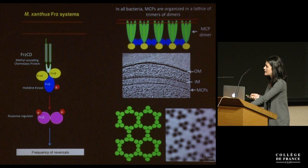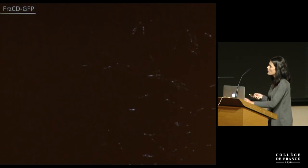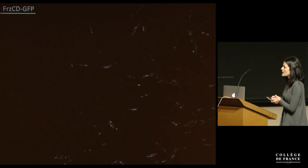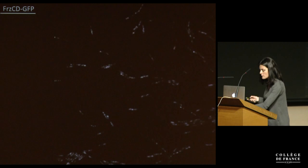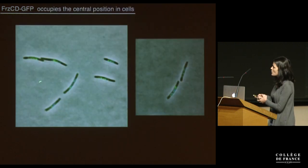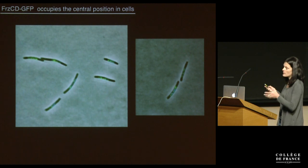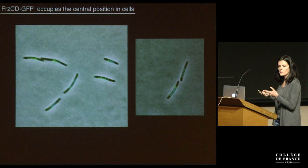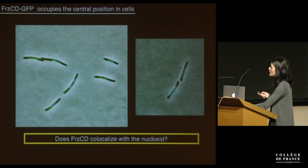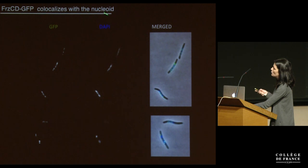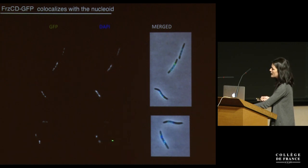So we localized FrzCD in cells and found that FrzCD-GFP can form a lot of discrete clusters distributed along the cell, and they are also very dynamic as cells move forward and reverse. What was interesting was that clusters did not occupy the whole cell length but were mostly concentrated at the central region of cells. This region has been recently described to be also occupied by the nucleoid in Myxococcus. So we wondered whether FrzCD co-localized with the nucleoid, and when we stained cells with DAPI, we found that FrzCD did localize with the nucleoid. Even in cells that have two segregated nucleoids, we can discriminate two sets of FrzCD clusters.